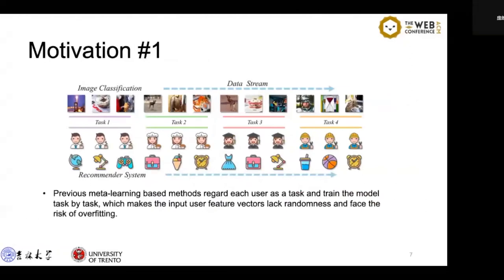And second, they learn a meta-model from these tasks and adapt it to new tasks. However, these methods suffer from two serious problems. First, models change the model task by task, which makes the input user features lack randomness and risks overfitting.